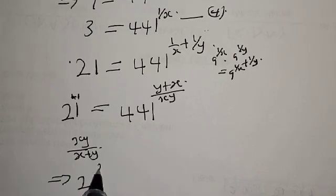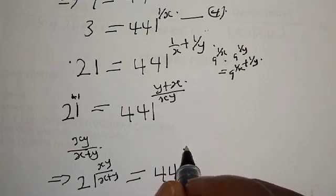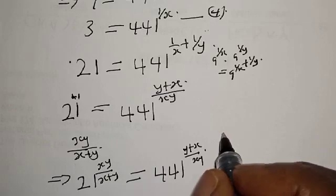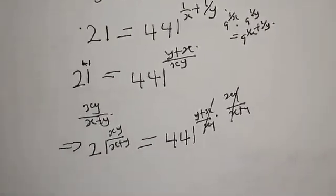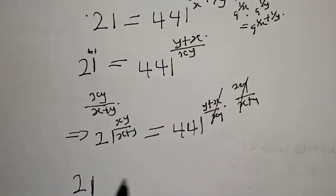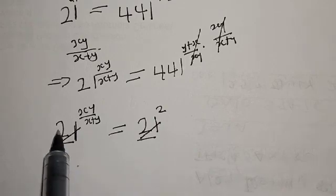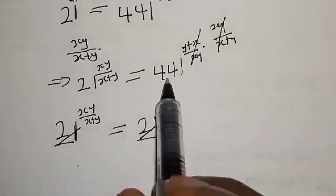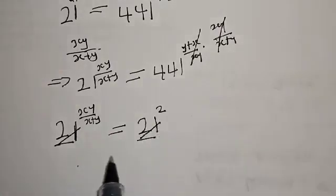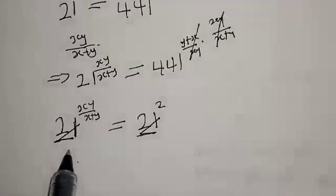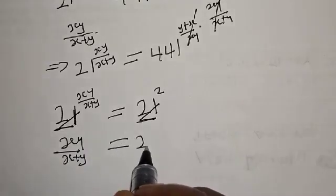This implies that 21 raised to power xy over x plus y equals 441 raised to power y plus x over xy times xy over x plus y. The xy over x plus y terms cancel, leaving us with 21 raised to power xy over x plus y equals 441. Now 441 is the same as 21 squared, so we have 21 raised to power xy over x plus y equals 21 squared. Since they have the same base, the exponents must be equal.